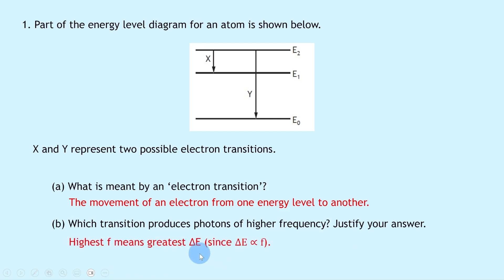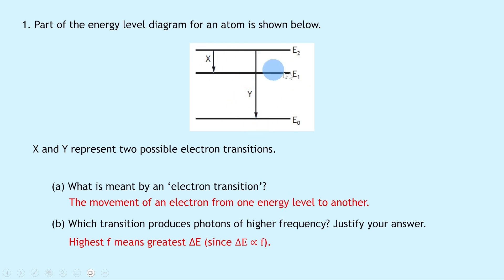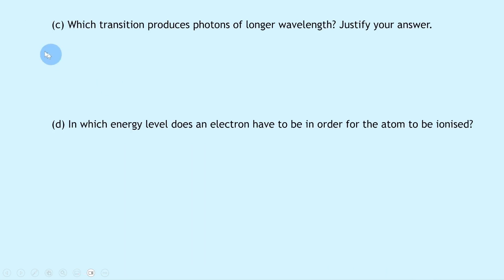Part b says: which transition produces photons of higher frequency? Justify your answer. Remember that highest frequency means the greatest change in energy, ΔE, and that comes from our expression ΔE = hf, which tells us that ΔE is directly proportional to frequency f. The transition with the greatest energy difference is Y, so we can say it's transition Y.